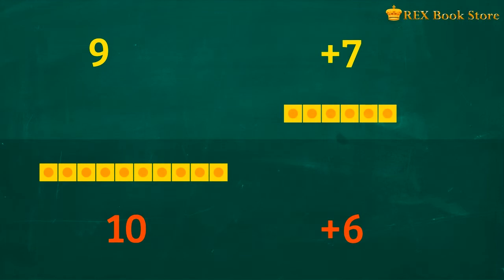So 9 plus 7 is equal to 10 plus 6. What's the answer? 9 plus 7 is equal to 16.